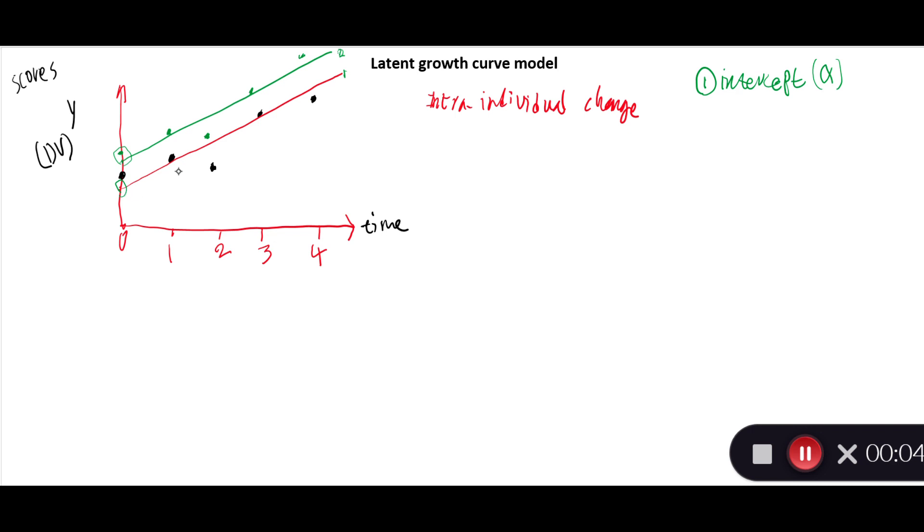The other thing we observe here is that the rate of growth is almost the same in both of these people, and it's represented by the slope. You see the slope is positive and it is moving in this direction, and these two are parallel lines. So we can say that the slope—that's the second parameter in latent growth curve—the slope is the same for these two people. Slope or the rate of growth, β.